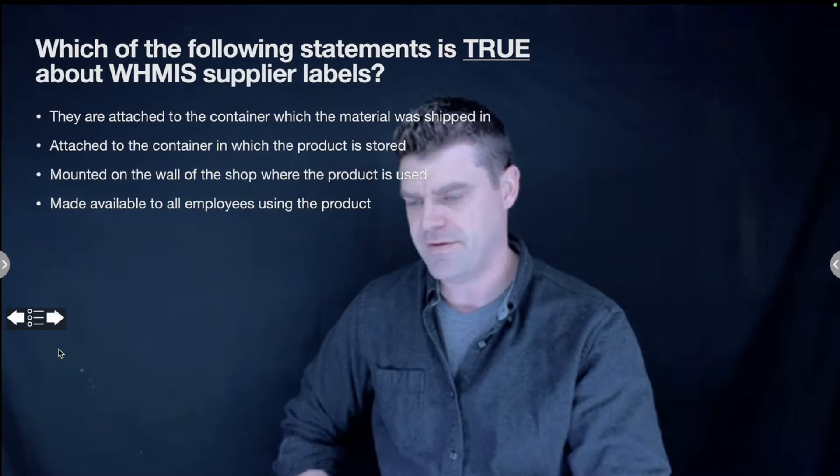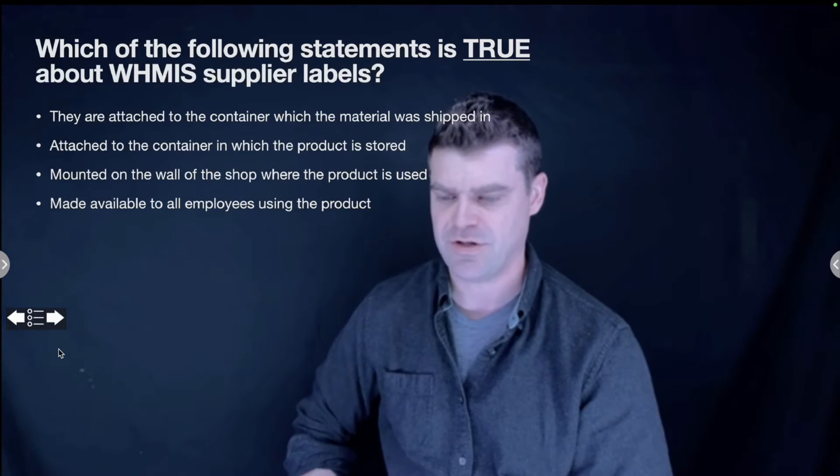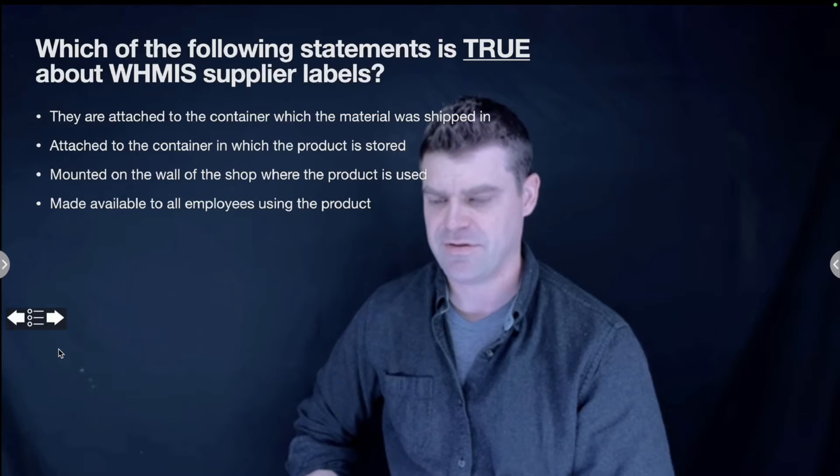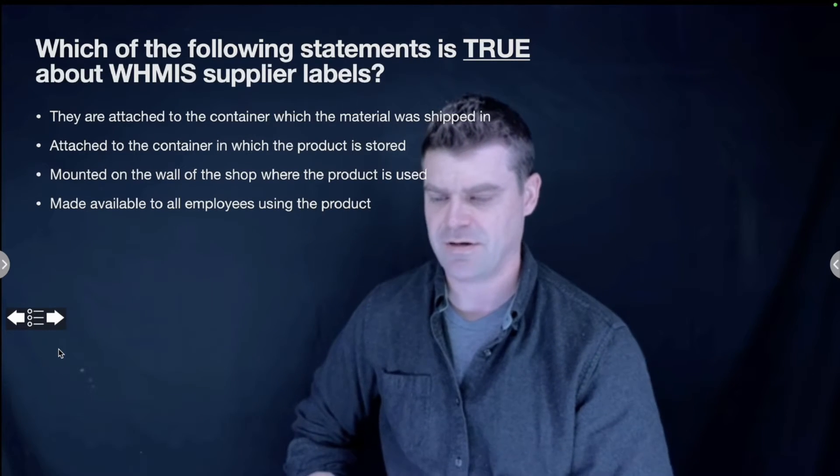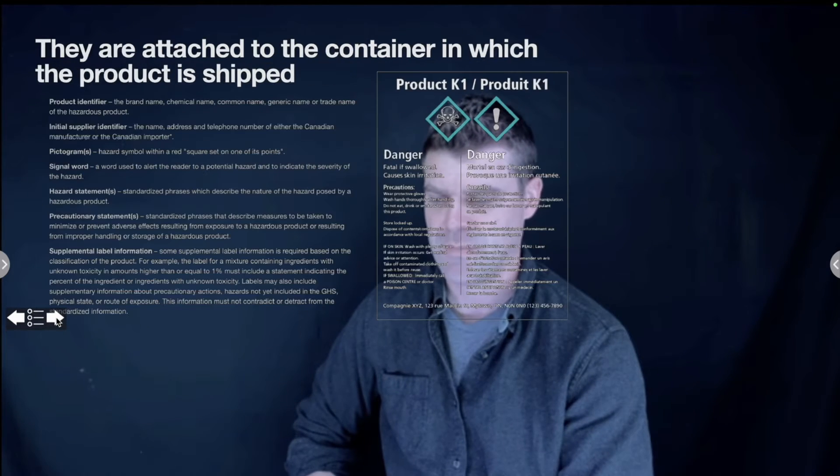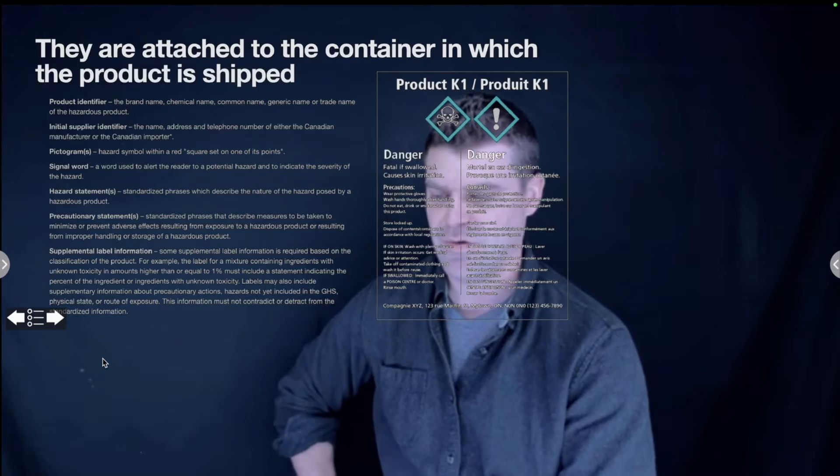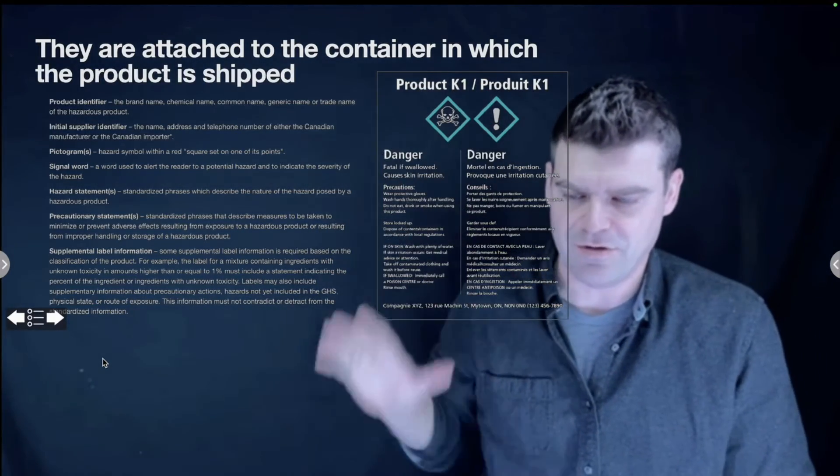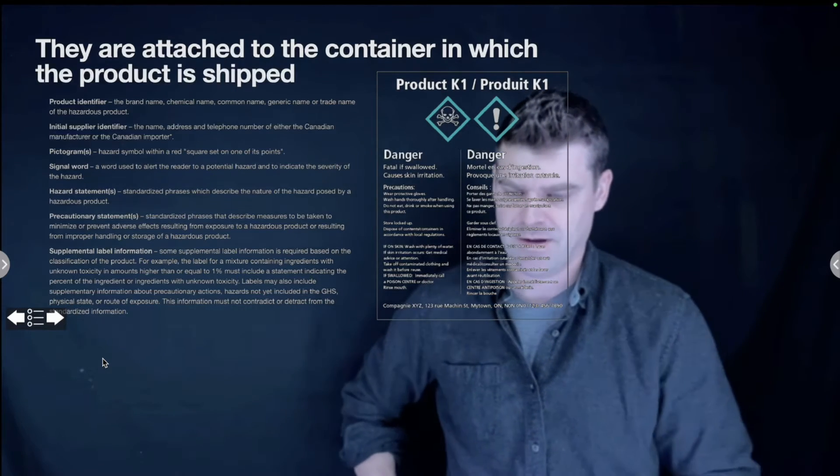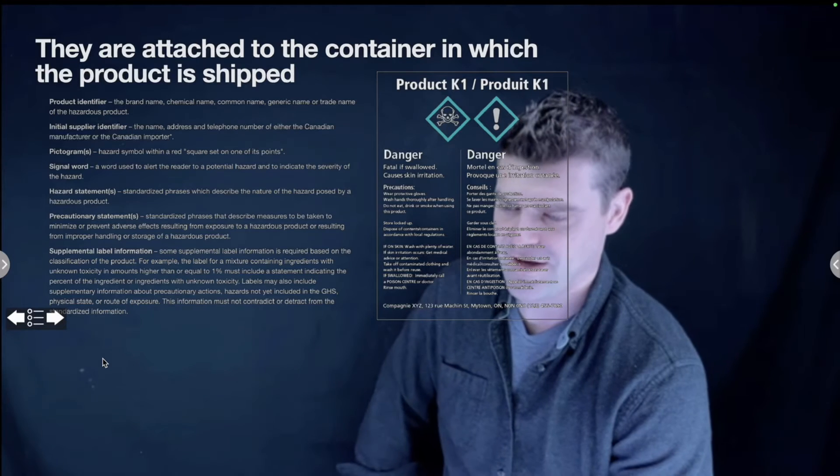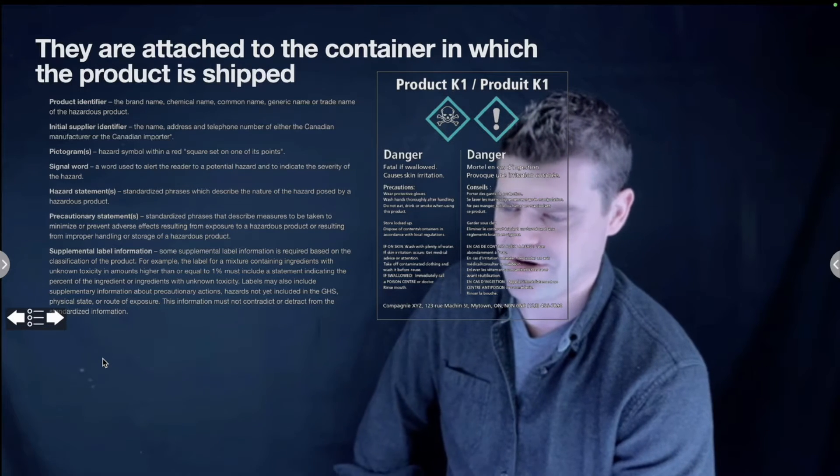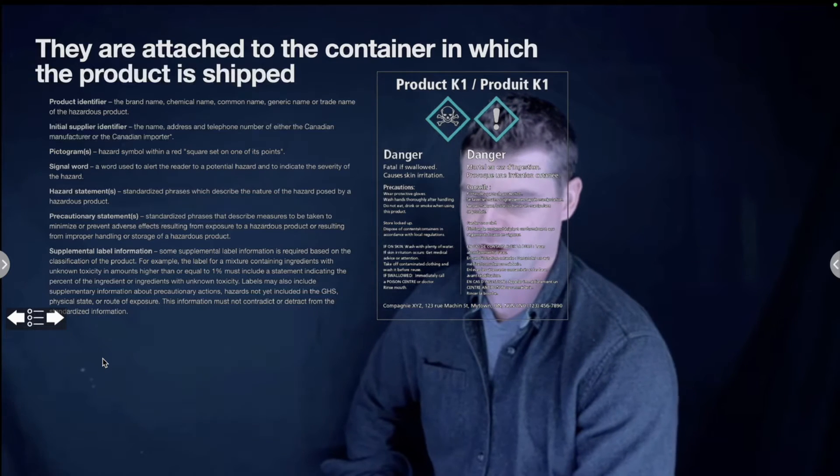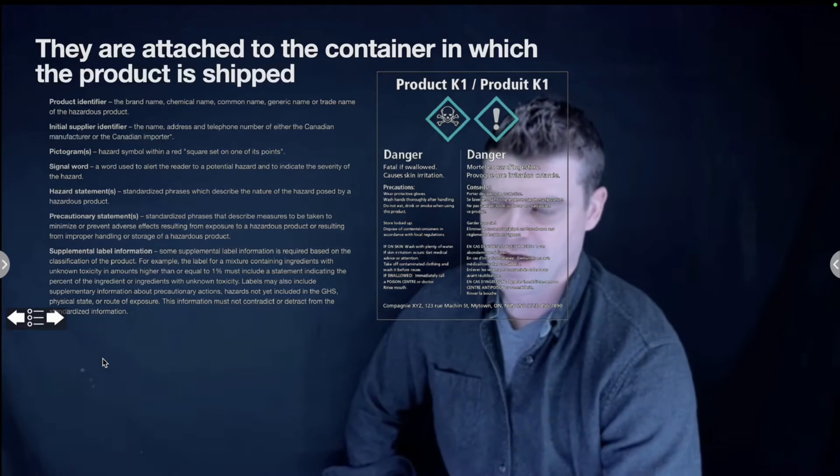Which of the following statements is true about WHMIS supplier labels? They are attached to the container which the material was shipped in, they're attached to the container in which the product is stored, they are mounted on the wall of the shop where the product is used, or they are made available to all employees using the product? The answer is they are attached to the container in which the product is shipped. This is what one of the supplier labels looks like, right on the side of the tote or barrel it gets shipped in. On here you're going to have a product identifier, initial supplier identifier, pictograms, signal word, hazard statement, precautionary statements, and supplemental label information.